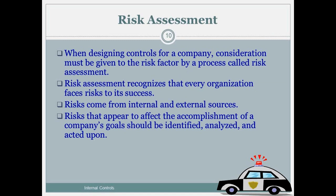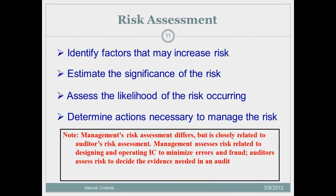The risk assessment steps include: identifying factors that may increase risk, estimating the significance of the risk, and not developing a cost-prohibitive internal control system — which is why risk assessment is so important. Assess the likelihood of the risk occurring, then determine what necessary actions have to be taken to manage that risk. This risk assessment is done by managers but is closely related to the auditor's risk assessment, because the auditor assessing internal controls is going to be looking at this.